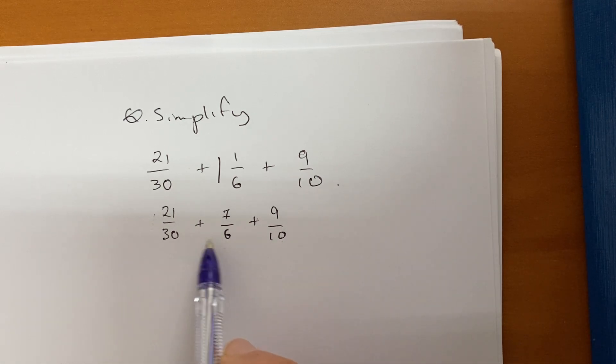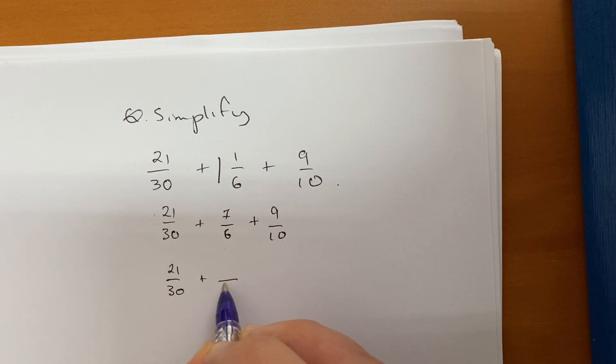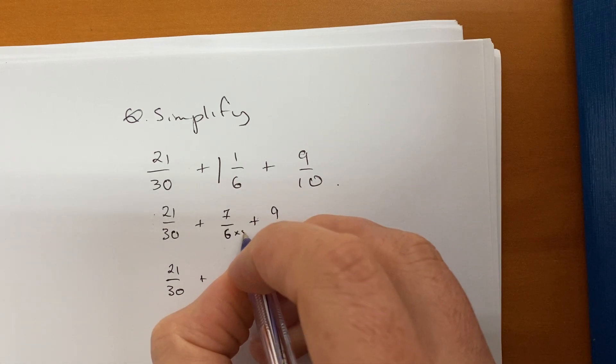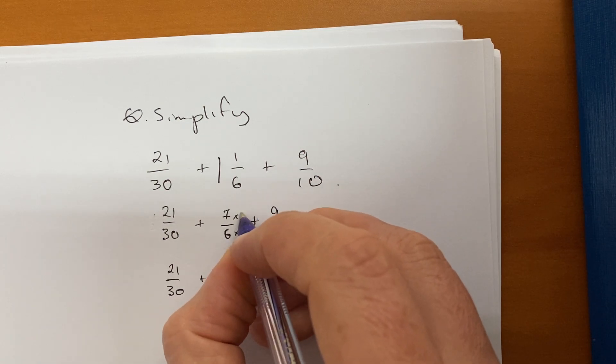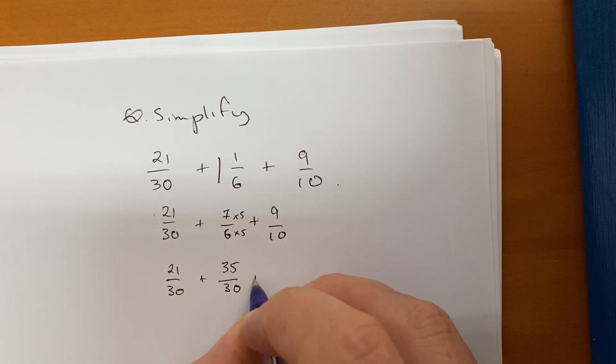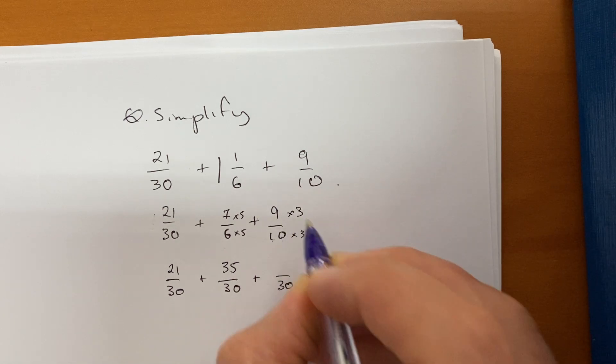They all divide into 30, so let's put them all over 30s. So 21 over 30 doesn't need to change. If this is moving up into 30s, that's going to be multiplied by 5 to get 30. 6 times 5 is 30, so I must multiply the top by 5, which gives 35. This one has got three times bigger to get the 30, so the top must get three times bigger, giving 27.